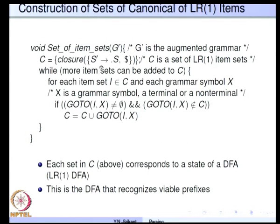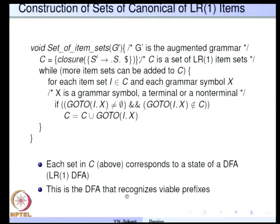Putting these two operations together, we define the set of items for G prime. We begin with the initial item S prime going to dot S comma dollar, take its closure, then apply the goto operation repeatedly, and collect the sets into the collection C. Each set in C corresponds to a state of the LR1 DFA, and this DFA recognizes the viable prefixes — this is what we learned in the last lecture.